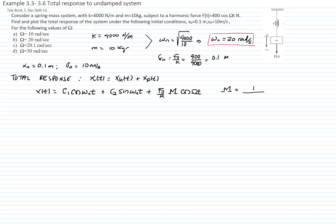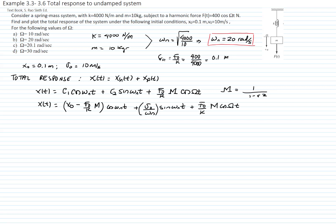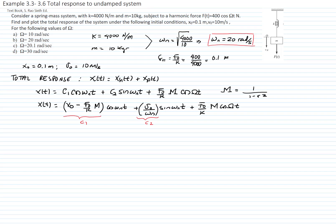The amplification factor is 1 over (1 minus r²). C1 is the initial displacement x₀ minus (F₀/k) times the amplification factor, and C2 is the initial velocity over the natural frequency. Remember that we have to find C1 and C2 for the total solution — even though those constants appear in the homogeneous solution, they must be determined from the total solution.